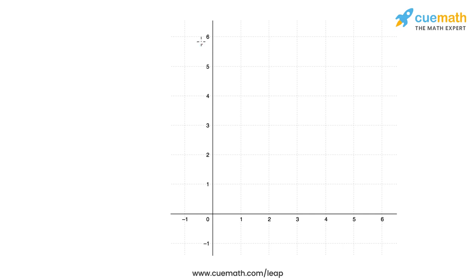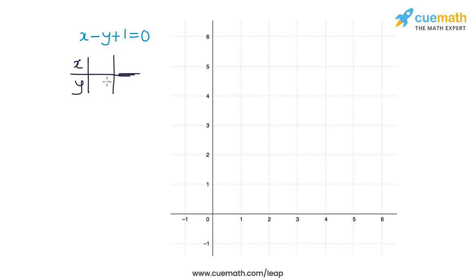Here's an axis on which we'll draw the graph. The first equation is x minus y plus 1 equal to 0. Let's find any two solutions of this equation — we'll find them such that both x and y are integers, so they're easy to plot. Here's an x-y table: if x equals 0, then y equals 1; and if x equals 3, then y equals 4.